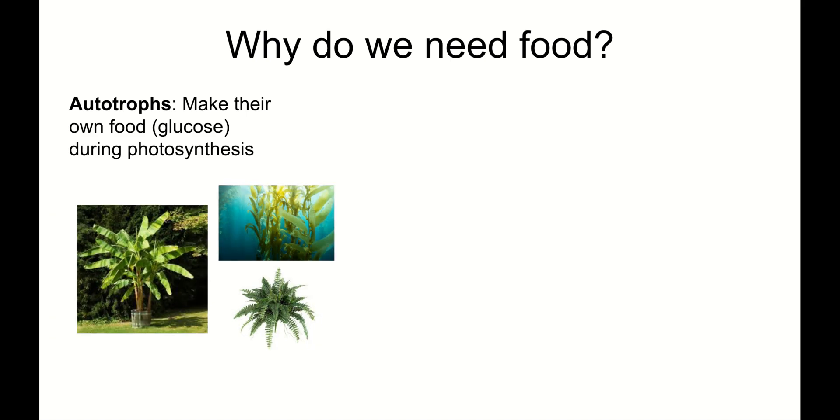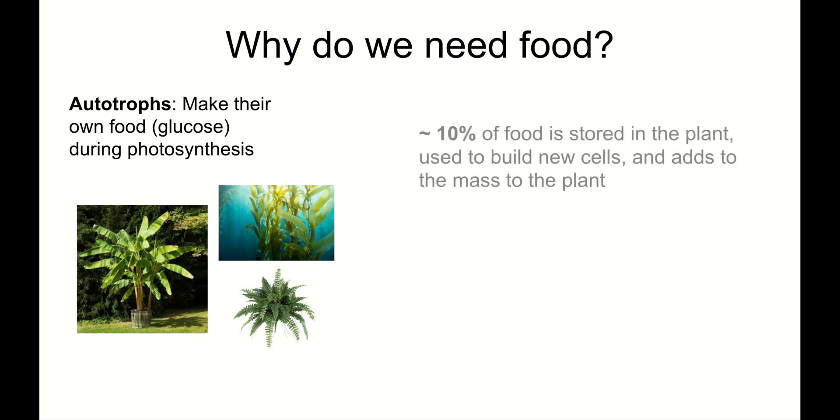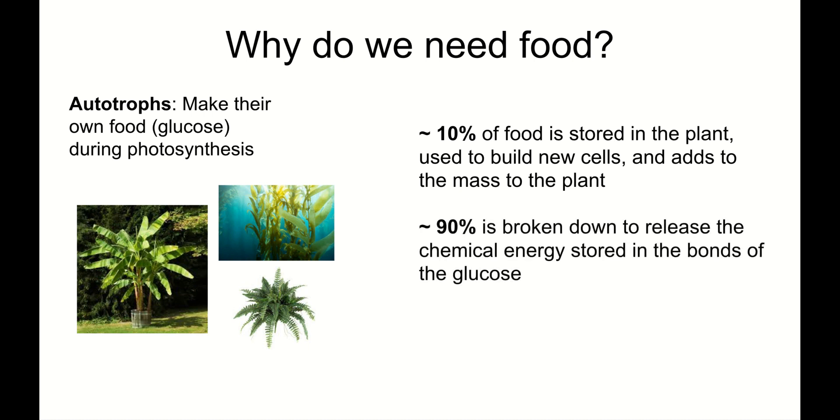So, why do we need food? Well, if you're an autotroph, that food goes in one of two places. About 10% of the food that autotrophs make is stored in the plant. It's used to build new cells in the plant and adds to the mass of the plant. However, about 90% is broken down to release the chemical energy that's stored in the bonds of the glucose. That stuff gets released back to the environment. Take a moment and record these details.